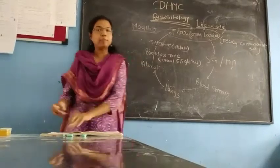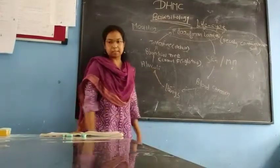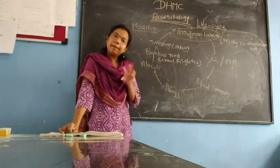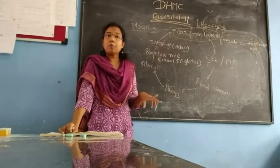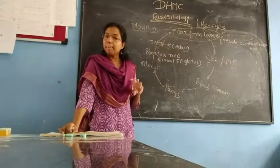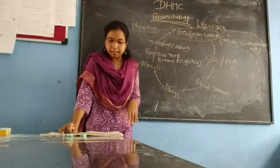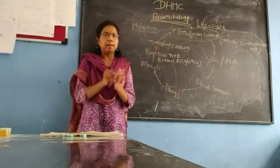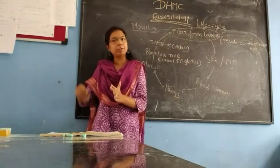Another interesting aspect relates to the rhabditiform larva: it can develop in two different ways. The source of rhabditiform larva is the egg laid by the female after fertilization. The first way is that they can mature directly into the infective filariform larva. Inside the intestine: breaking of the egg, release of the rhabditiform larva, which directly matures into the filariform larva.